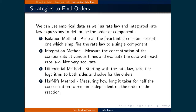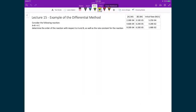We will now do an example of the differential method. We consider the reaction where we have two reactants A plus B giving product C. We're going to determine the order of A and B, as well as the rate constant K, using a data set where at some initial time we have the concentration of A, the concentration of B, and the initial rate of the reaction.